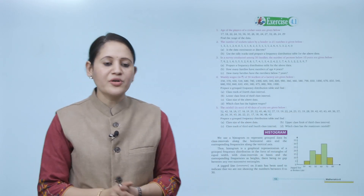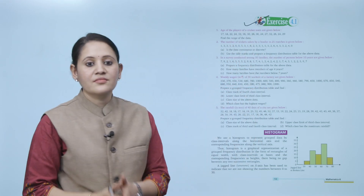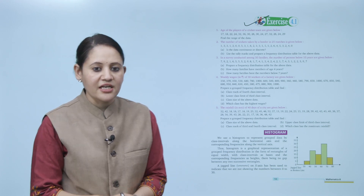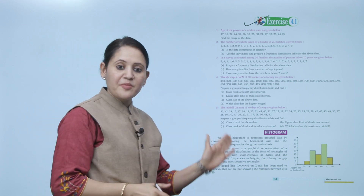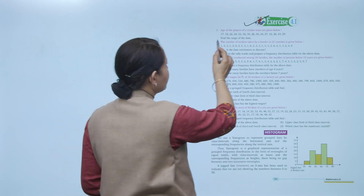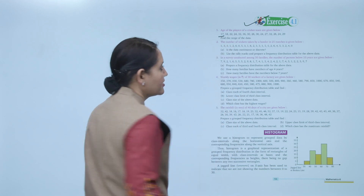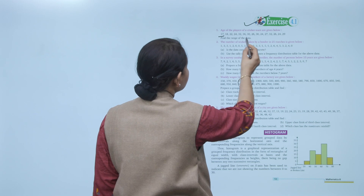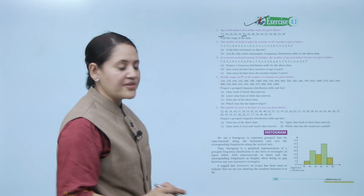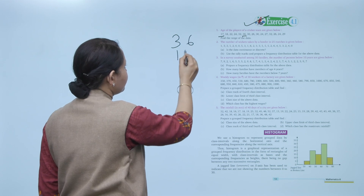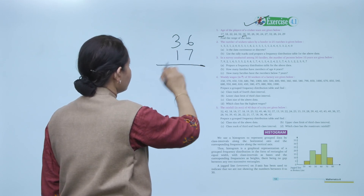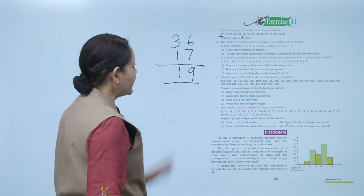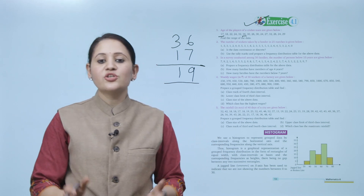Exercise 4.1: Ages of the players of a cricket team are given below. Find the range of the data. Range means the difference between the maximum and minimum values. The minimum age is 17 and the maximum is 36. So the range is 36 minus 17, which equals 19.